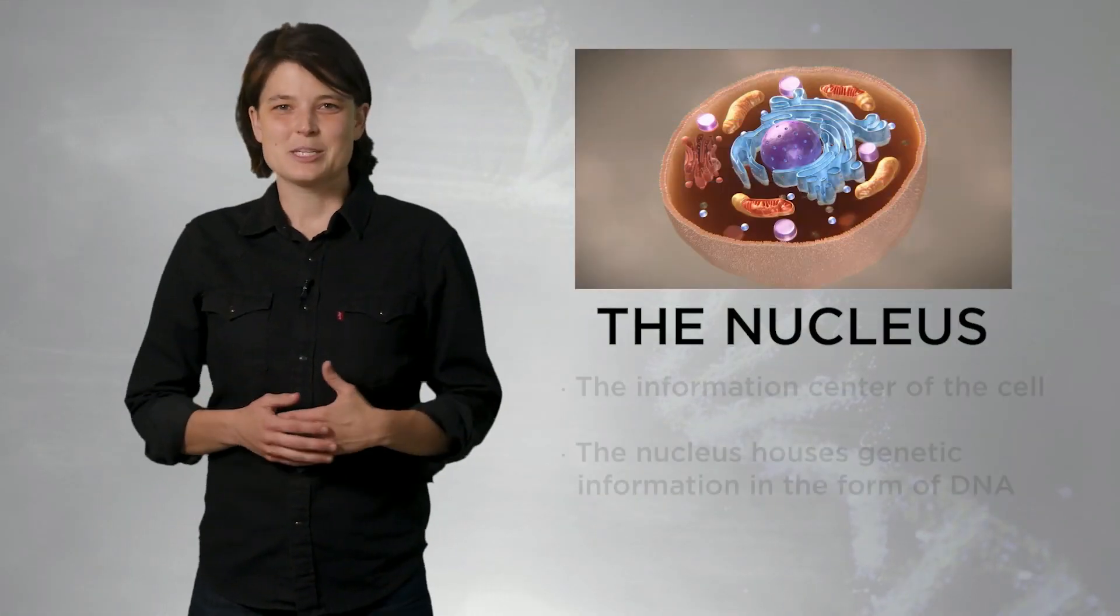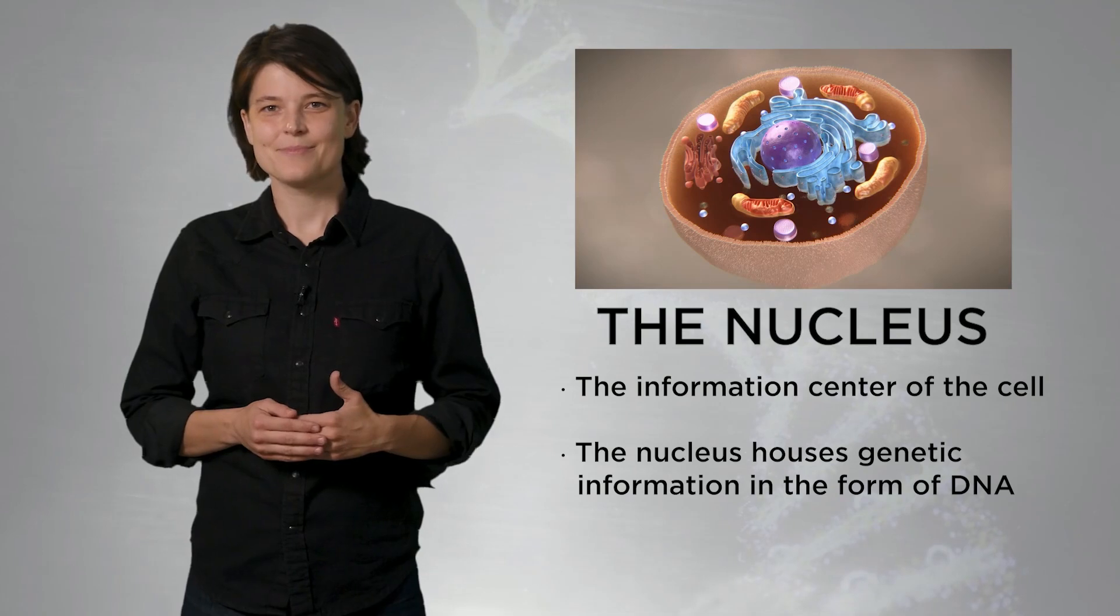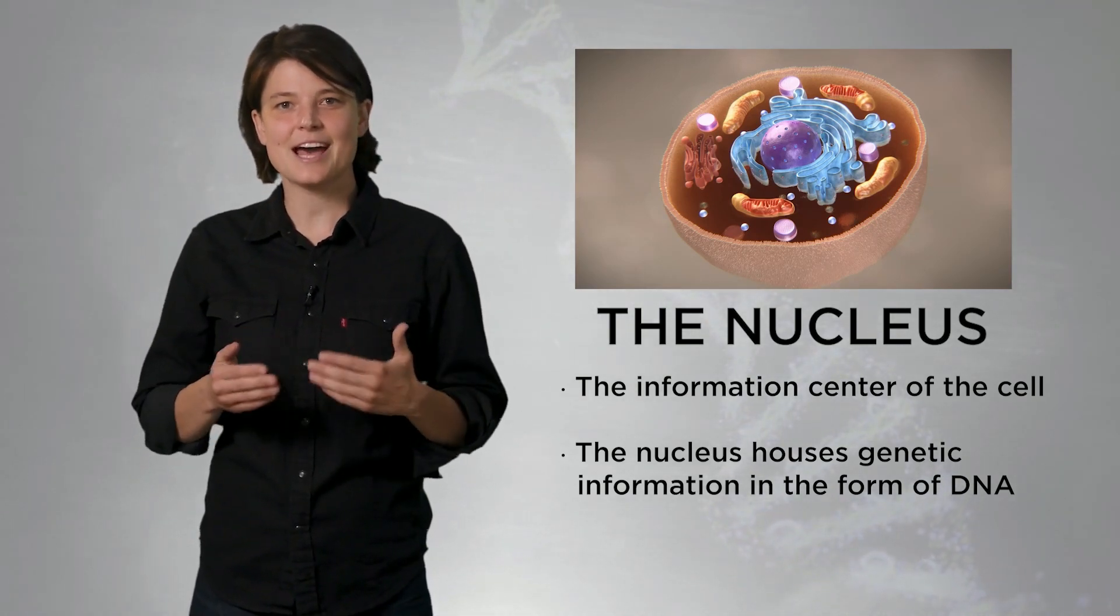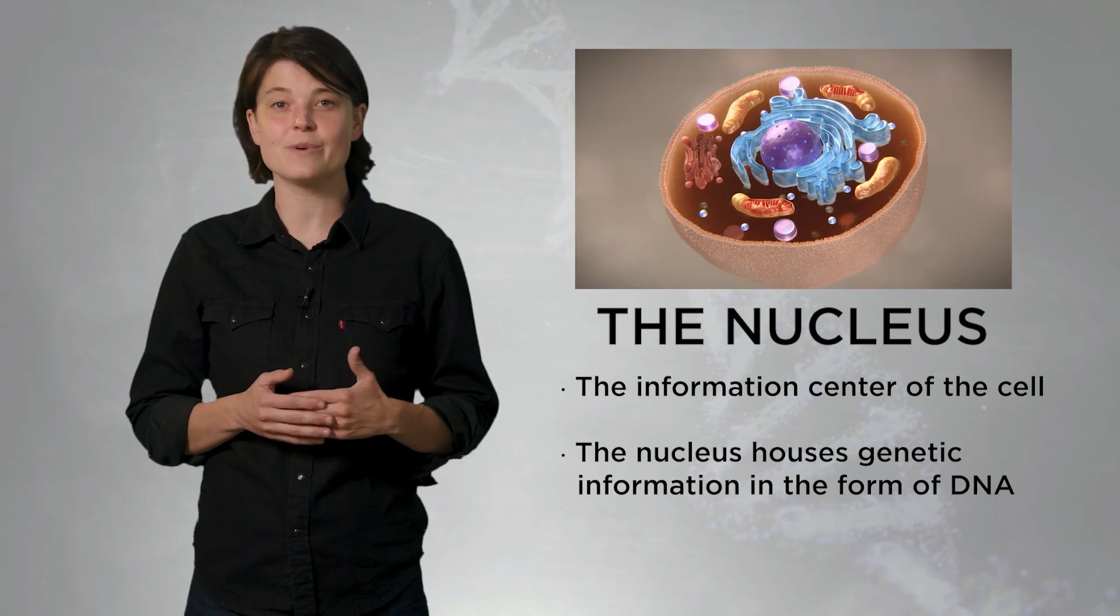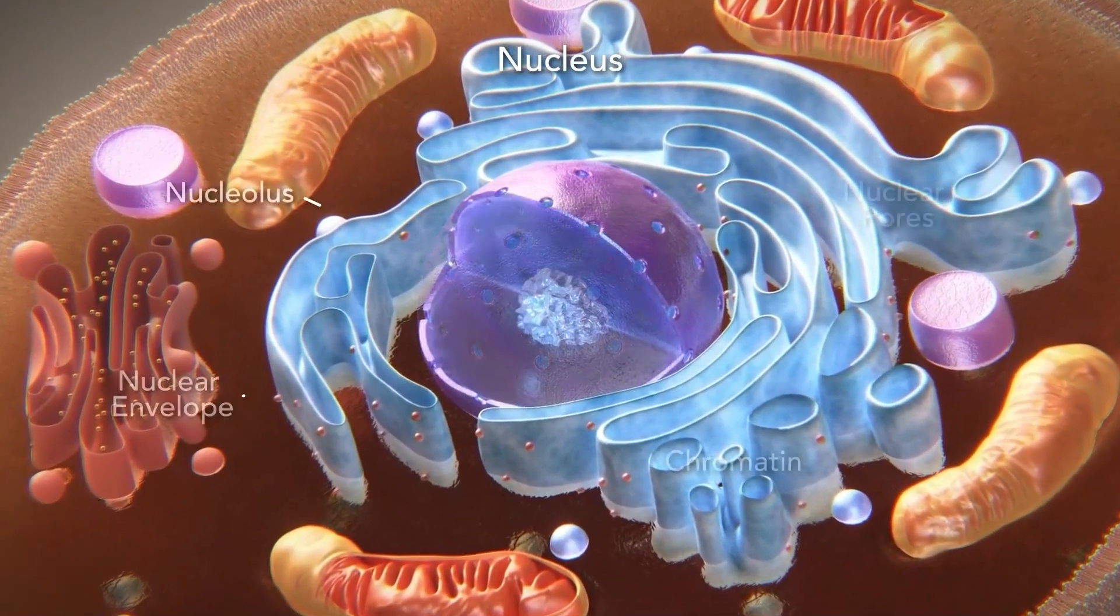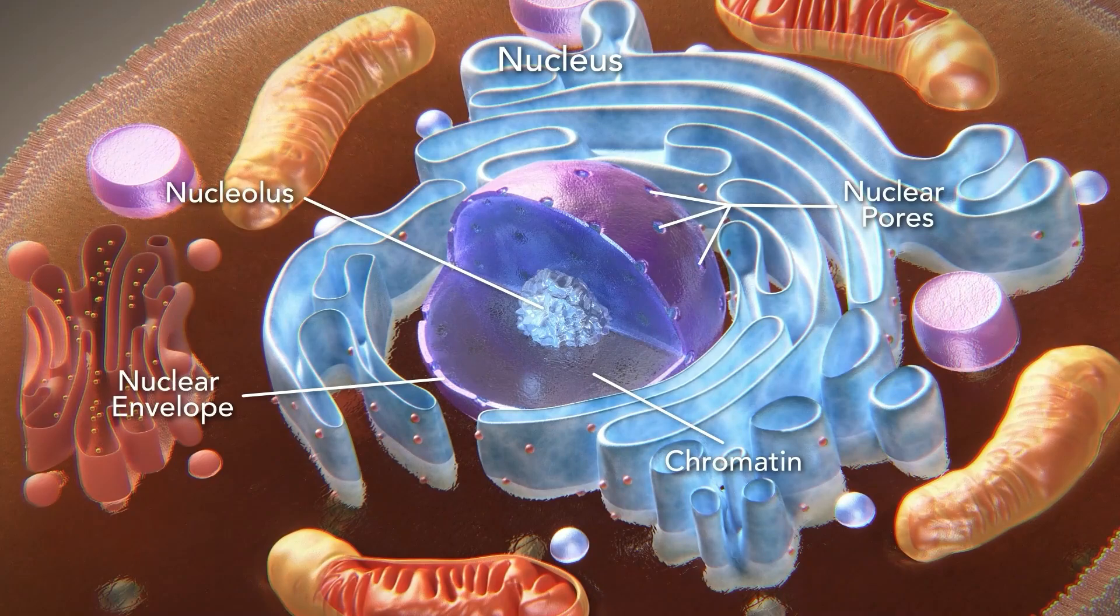We start our exploration of the eukaryotic cell in the nucleus. The nucleus can be considered as the information center because it houses genetic information in the form of DNA. The nucleus is made of three main components: the nuclear envelope, chromatin, and the nucleolus.